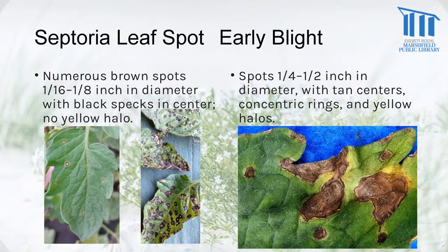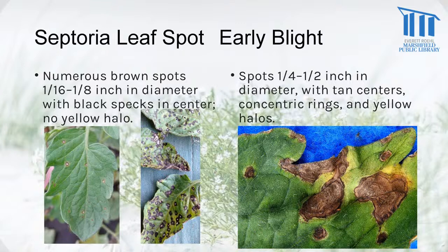Septoria leaf spot, on the left, has numerous brown spots, one-sixteenth to one-eighth of an inch in diameter. They may have black specks in the middle, but there's no halo around the spots. Early blight looks a little different — the spots are larger, a quarter to a half inch in diameter, with tan or brown centers showing concentric circles like rings of a tree, and they often have a yellow halo around the brown spot. You can have both on the same plant.